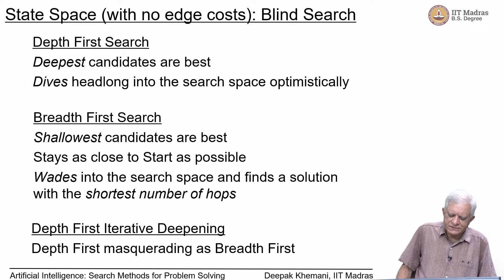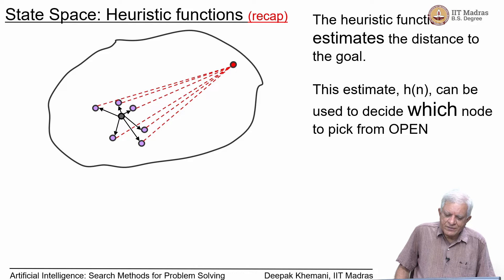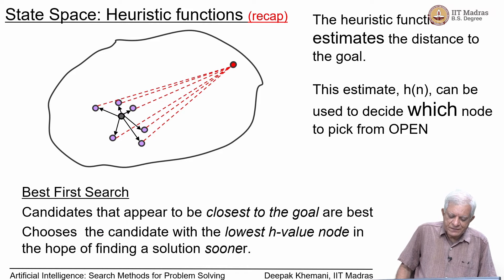Depth first iterative deepening also found the optimal solution, but it was basically simulating how breadth first search works — a depth first algorithm masquerading as breadth first. Then we looked at heuristic functions: the idea was to find a solution faster by looking at estimates to the goal and picking the node which appears closest to the goal — picking candidates with the lowest heuristic value in the hope of finding the solution sooner.